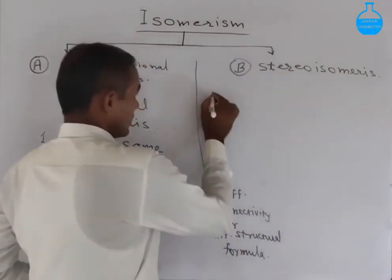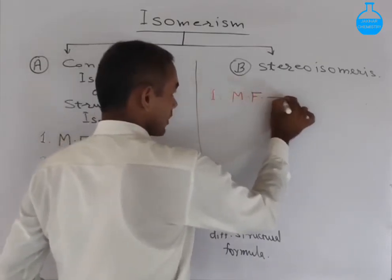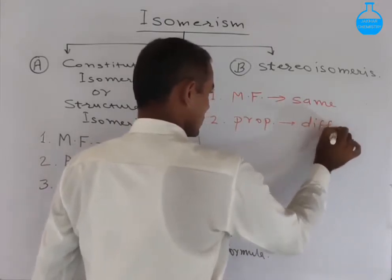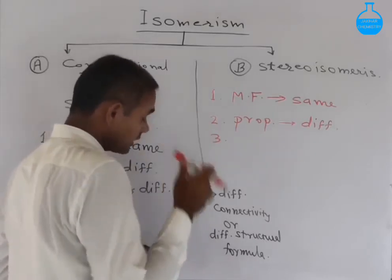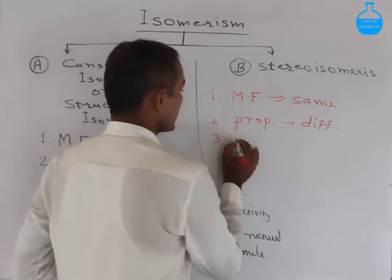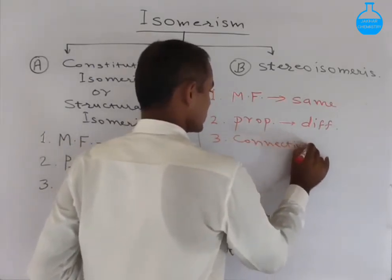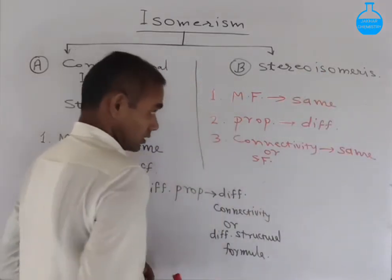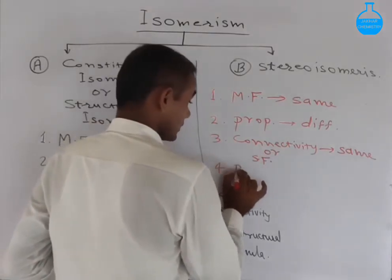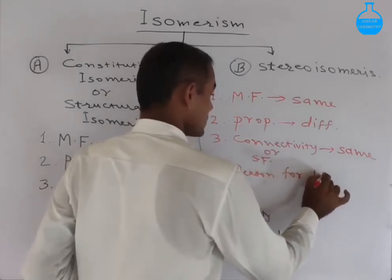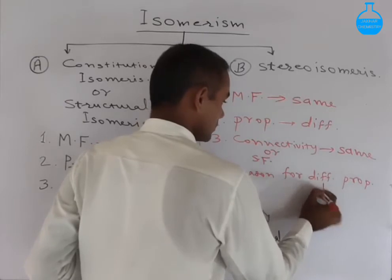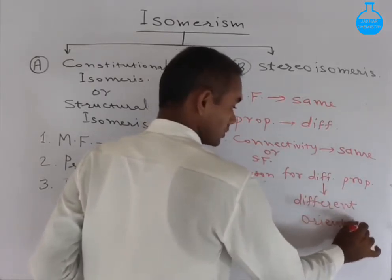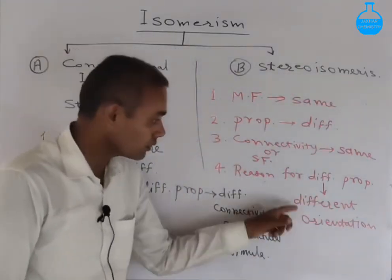Now for stereo isomers: point number one — molecular formula should be the same; point number two — properties should be different; point number three — the reason for different properties will be different orientation. Here connectivity is not the reason for different properties. So point number three: connectivity or structural formula is also similar for stereo isomers, but still these are having different properties. The reason for different properties is different orientation.